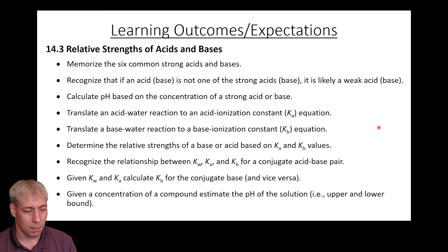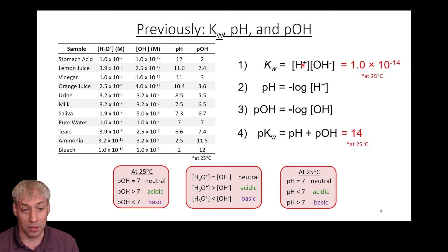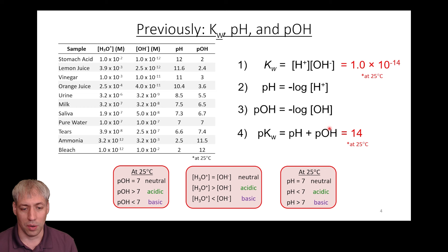We're talking about relative strengths of acids and bases. Previously we defined the relationship between these various things: Kw equals [H3O+] or [H+] times [OH-], and that's 1 × 10⁻¹⁴ at 25°C. pH and pOH are just convenient notation for these concentrations — the negative log of Kw, [H3O+], and [OH-] is equal to 14, a convenient relationship between them.